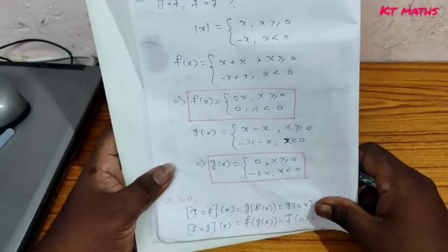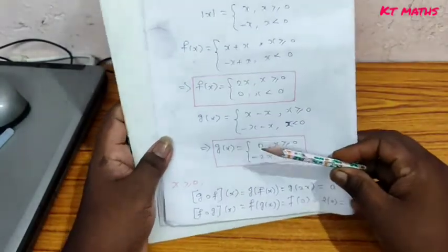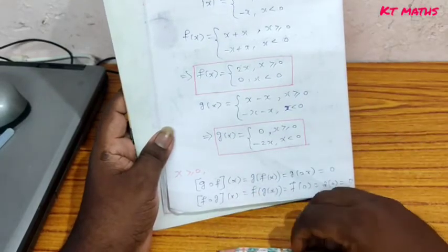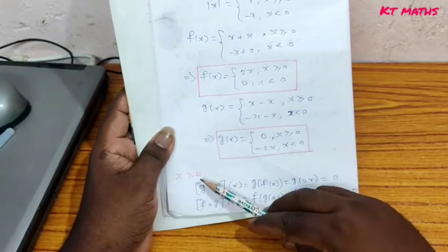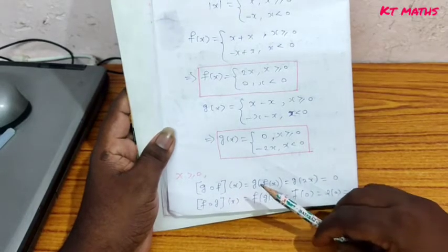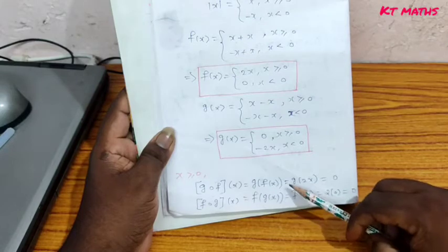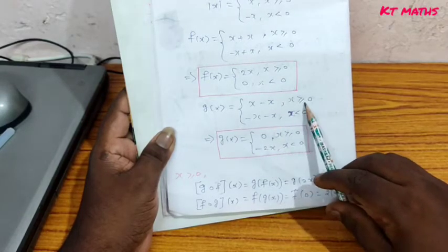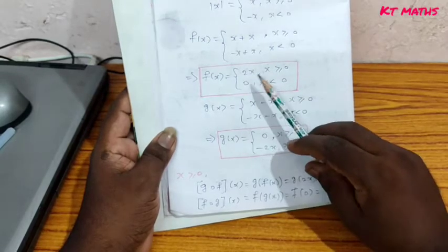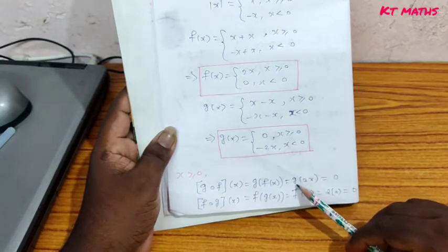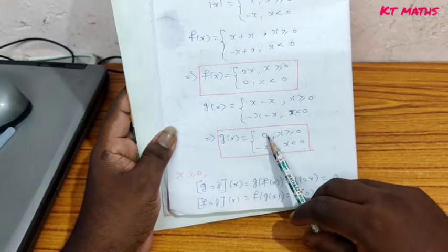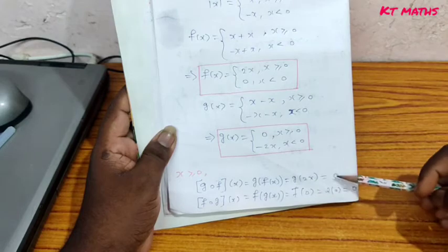Now we compute g composition f and f composition g. When x greater than or equal to 0: g composition f of x equal to g of f of x equal to g of 2x. Since 2x greater than or equal to 0, g of 2x equal to 0.